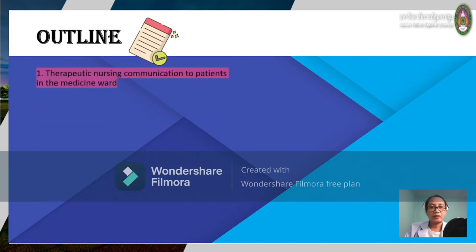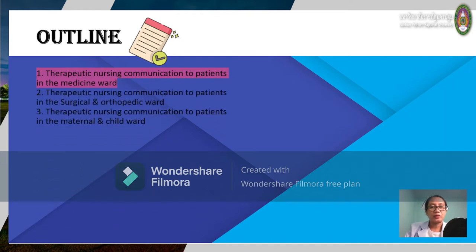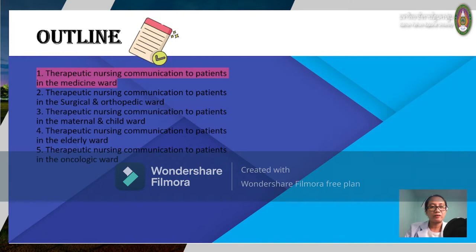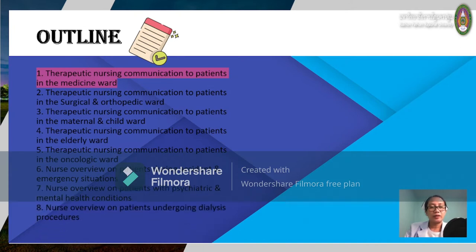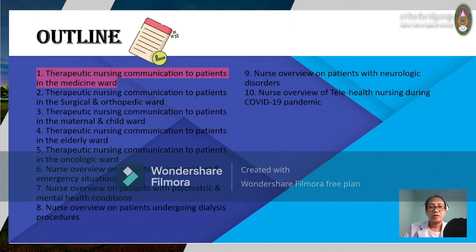The outline of this course includes rapid communication with patients in the medicine ward, surgical and orthopedic ward, maternal and child ward, elderly ward, and oncologic ward. The next phase covers nurse-patient interaction during accident and emergency situations, psychiatric and mental health conditions, patients undergoing dialysis procedures, patients with neurologic disorders, and nurse overview on telehealth nursing during COVID-19 pandemic.